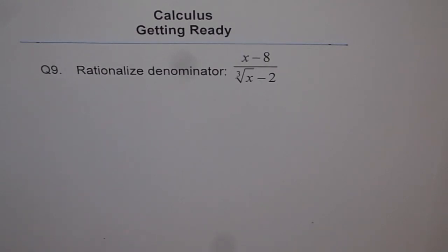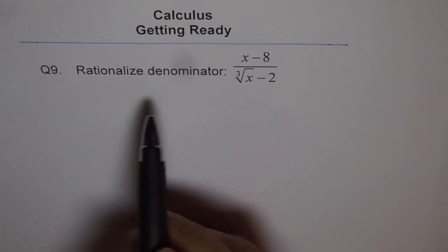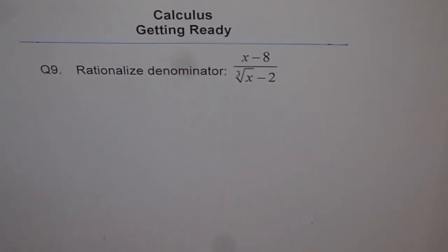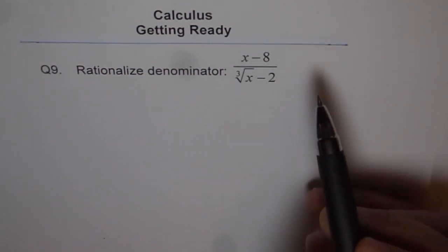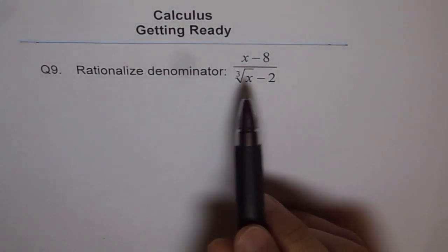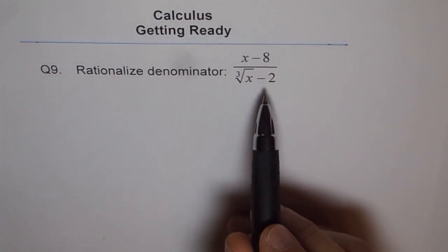Here is question 9 to get you started with calculus. We are trying to rationalize the denominator of the given function. The function is x minus 8 divided by cube root of x minus 2.